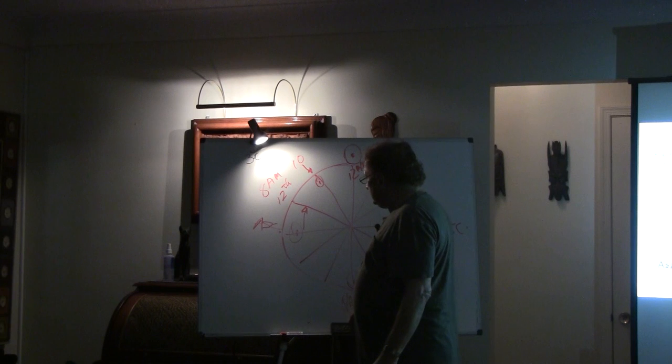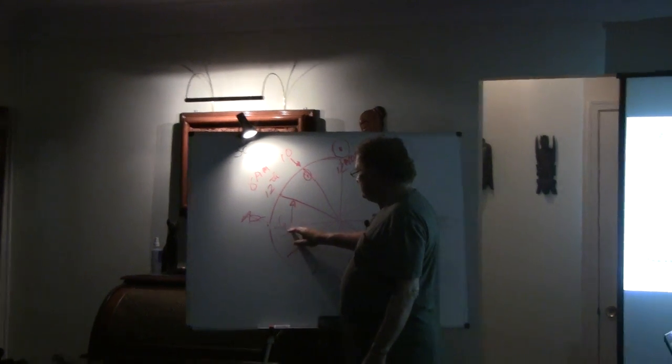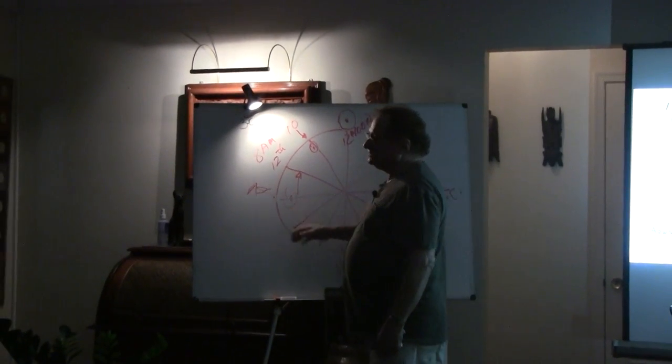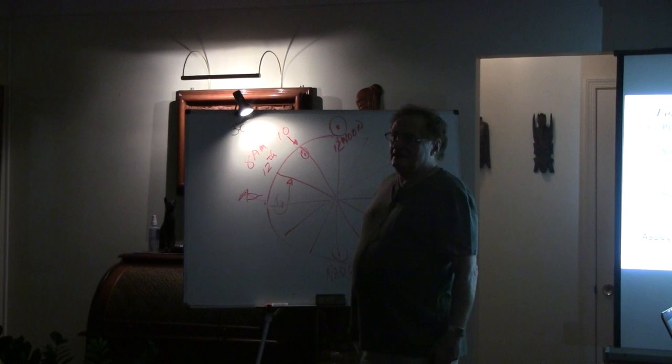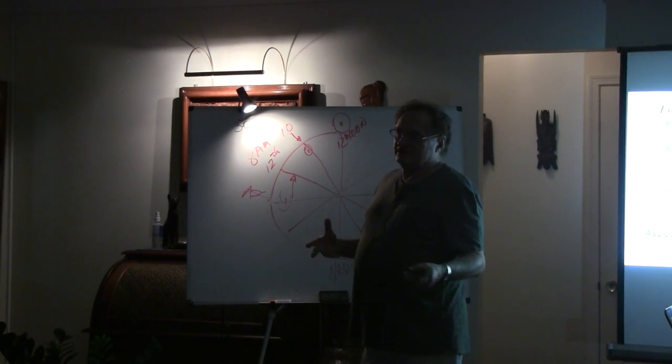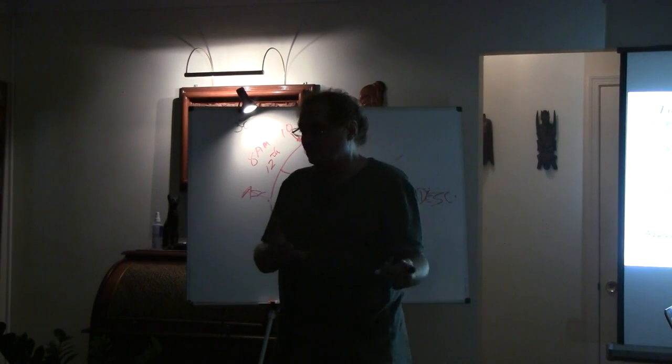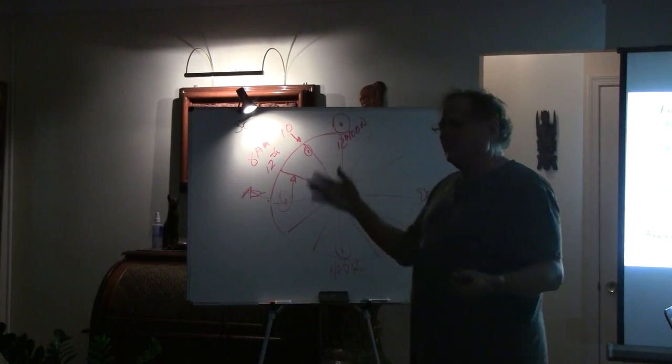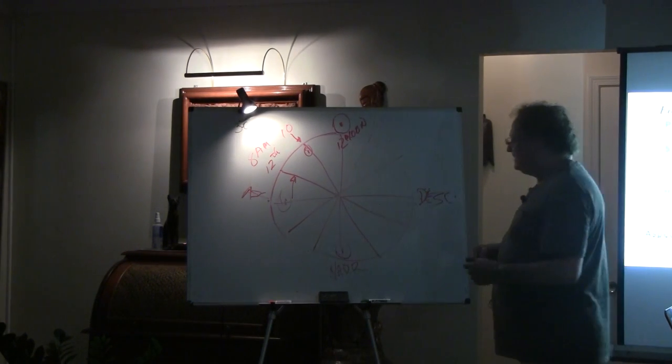The sun only moves about a degree a day. The moon moves about 12 degrees, sometimes 14, depends. It can move 10 or 12 or 14 degrees. Sometimes it's faster than other times.